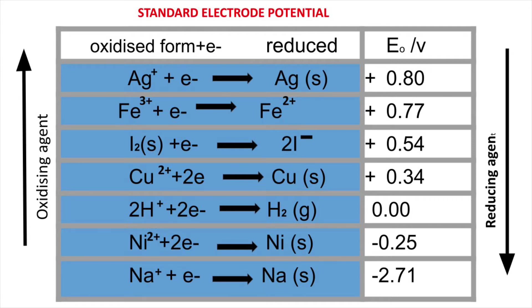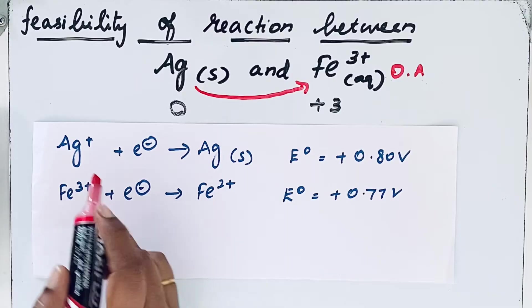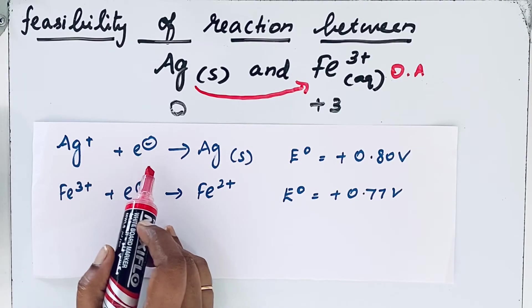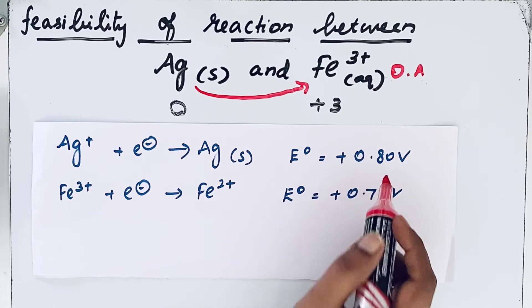Generally, elements with positive electrode potential can behave like a good oxidizing agent which can pull electrons. For example, when Ag⁺ gains electrons, the electrode potential is plus 0.80 volt.